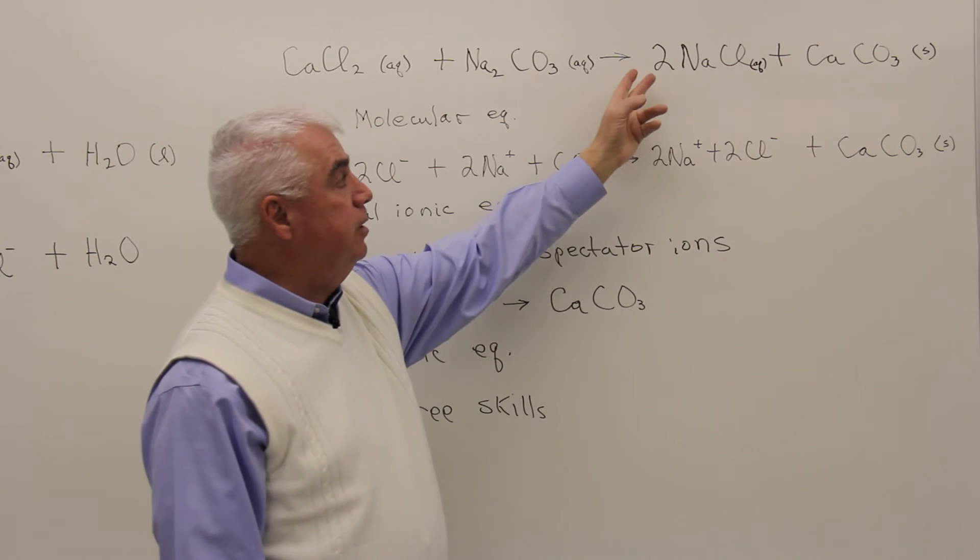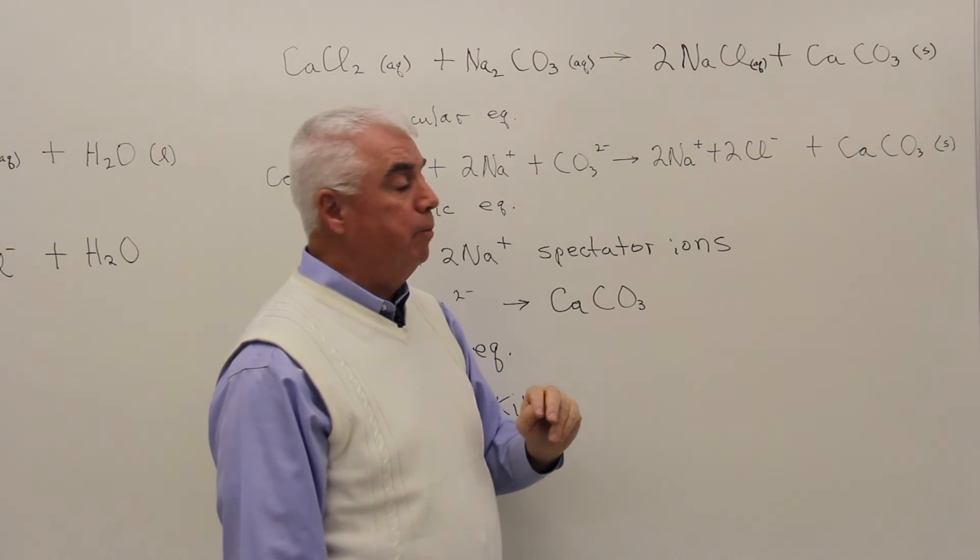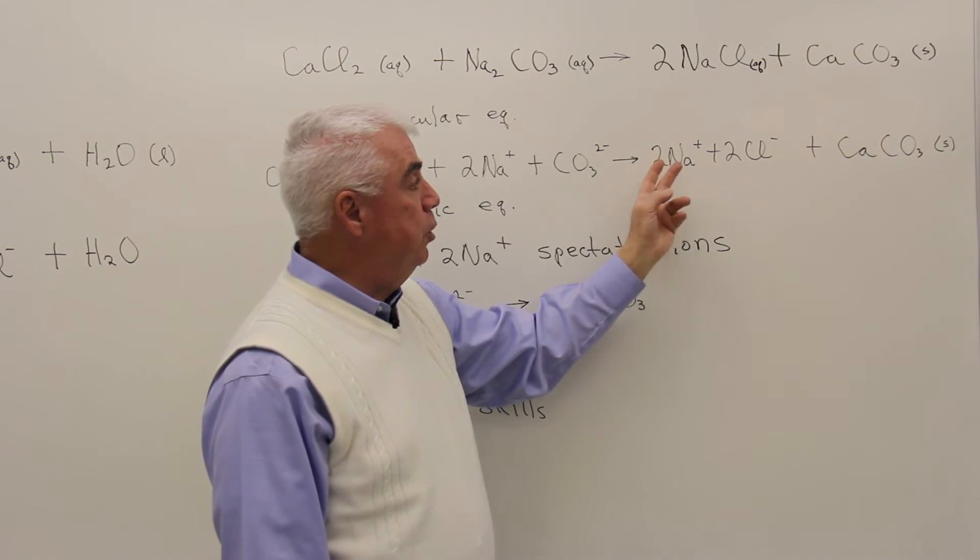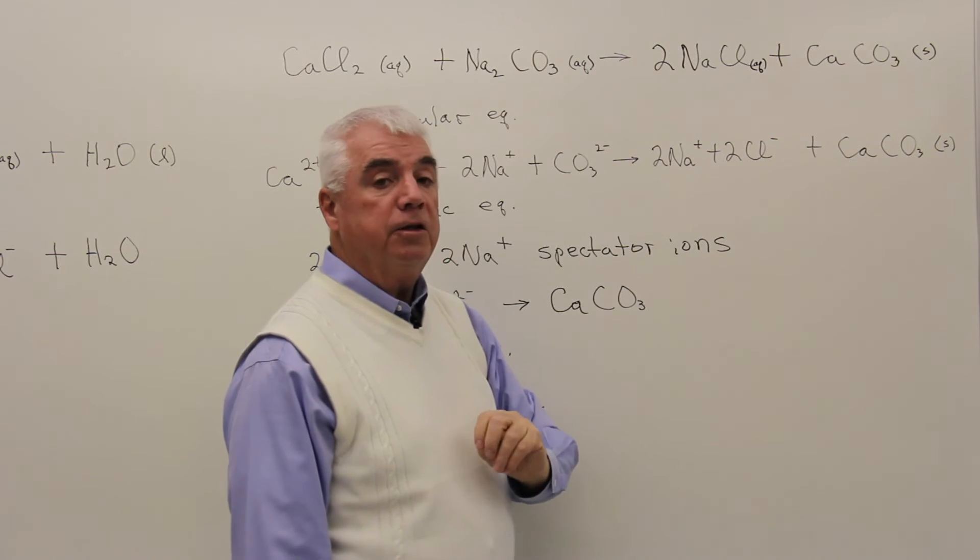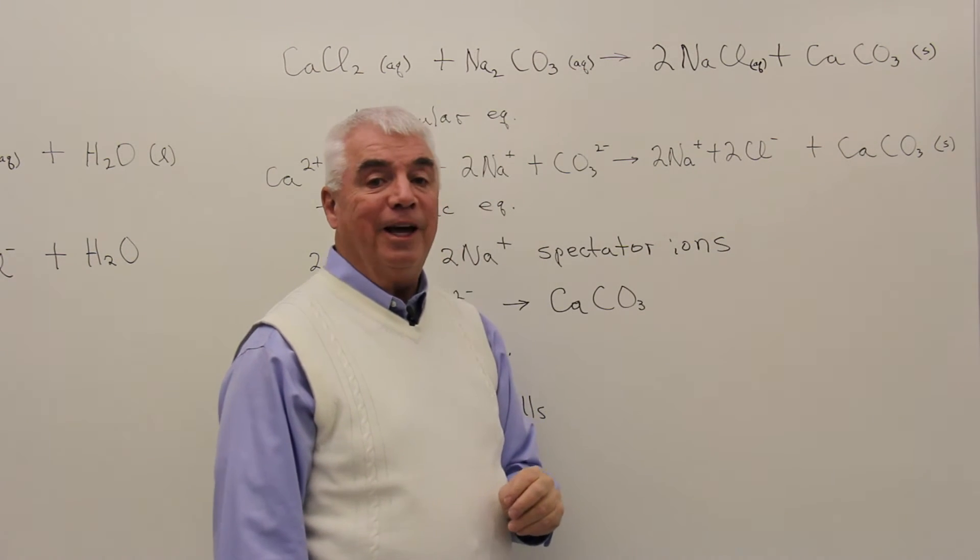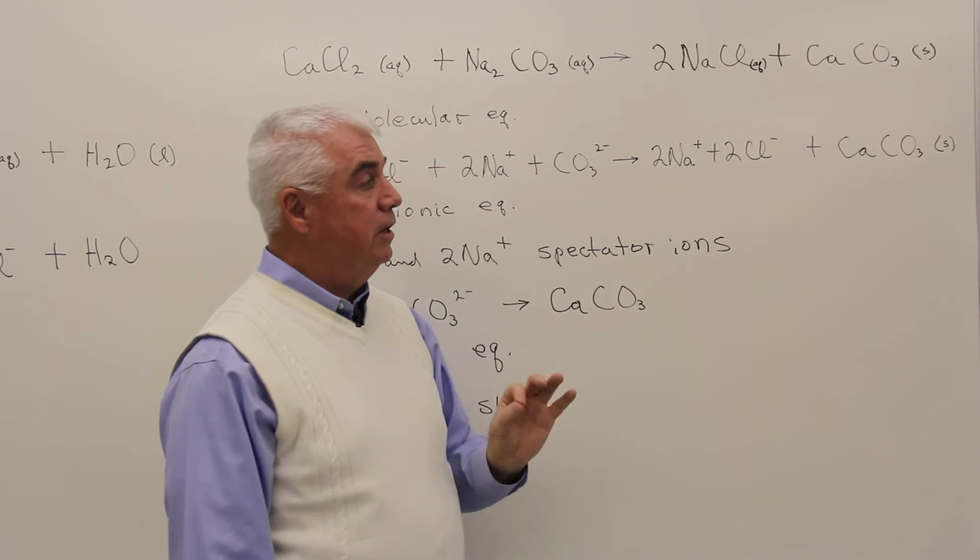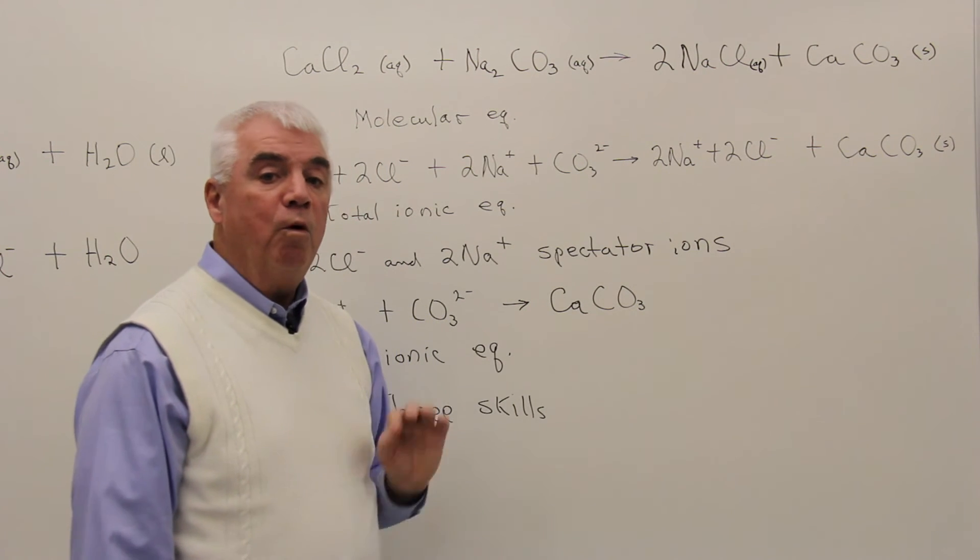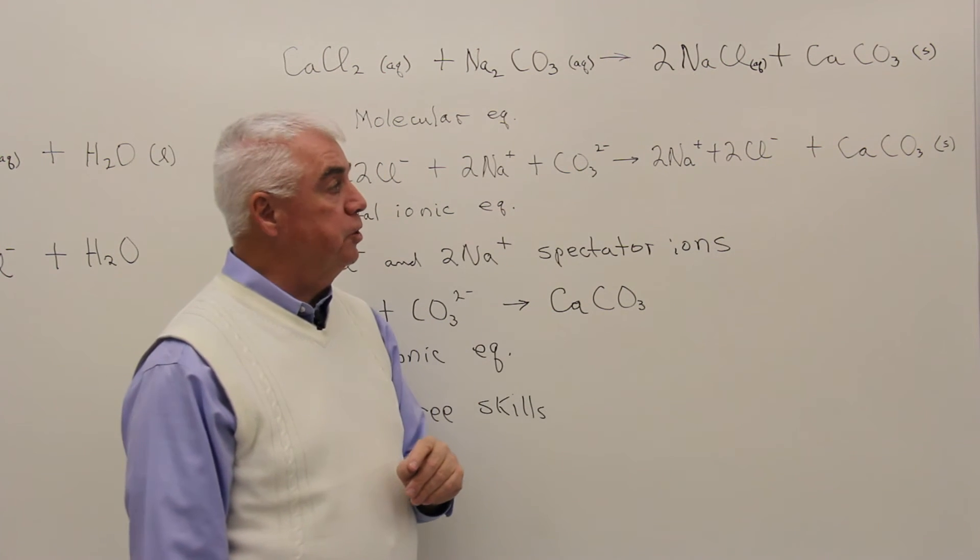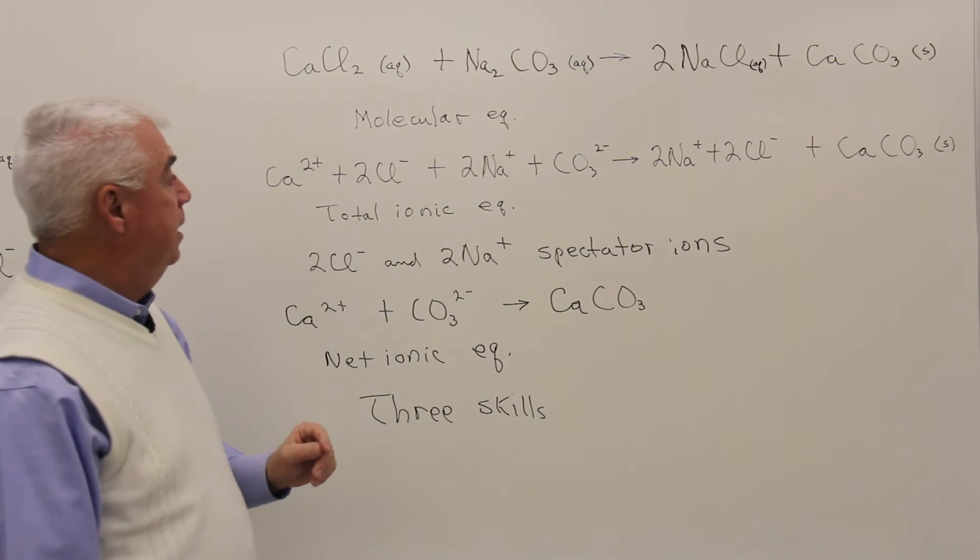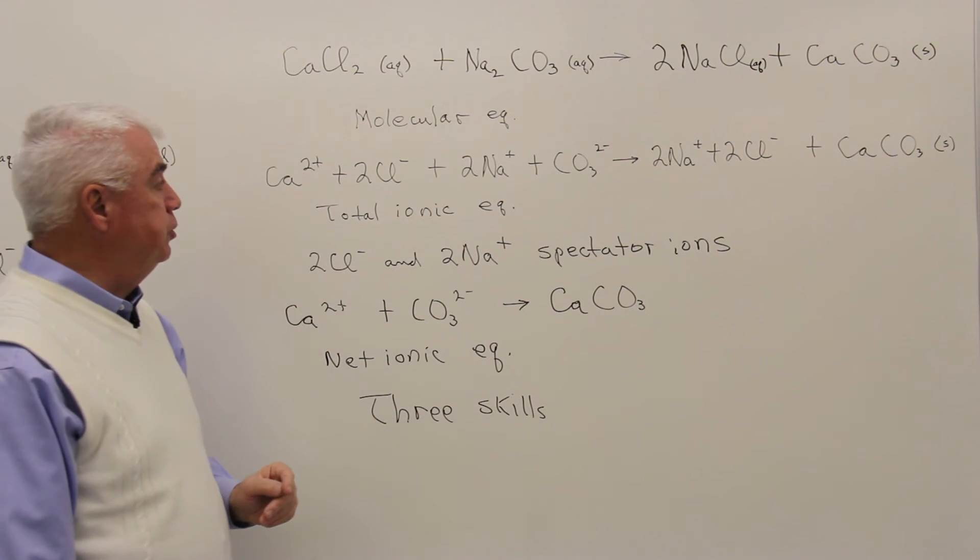Over on the right hand side, we get two molecules of sodium chloride, so we have two sodium ions, two chloride ions, and because the calcium carbonate is written as a solid, does not dissolve, we won't break it apart into ions, we'll just repeat its formula. This would be the total ionic equation.